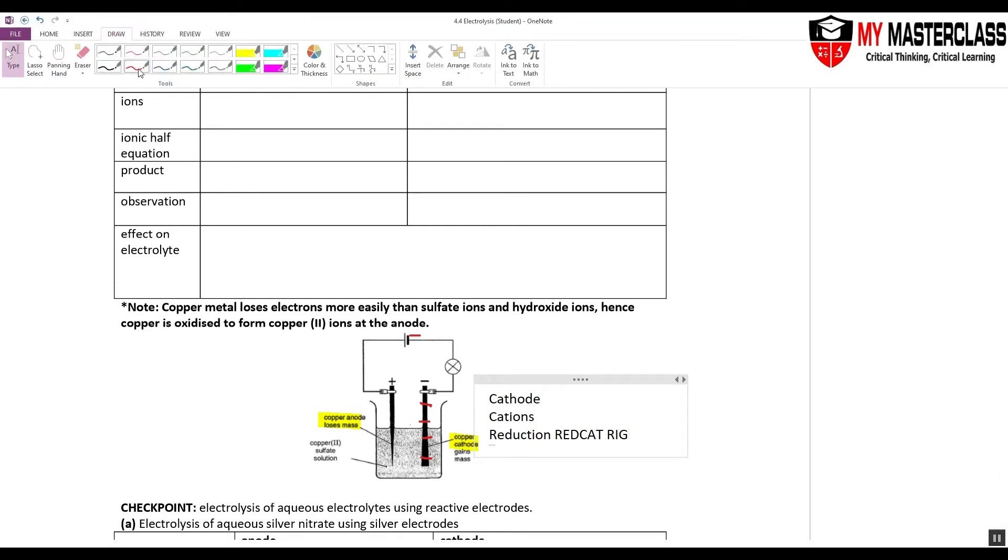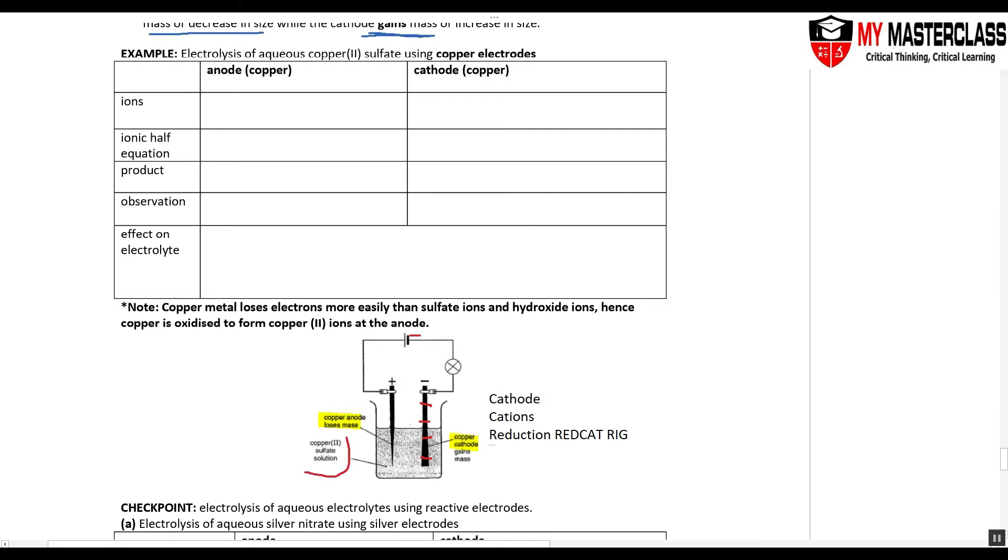So in this example, I have copper sulfate solution. What are the cations inside? Cu2+, H+, copper sulfate solution. And what are the opposite at your anode side? Yeah, this is the anode positive. Anions get attracted.